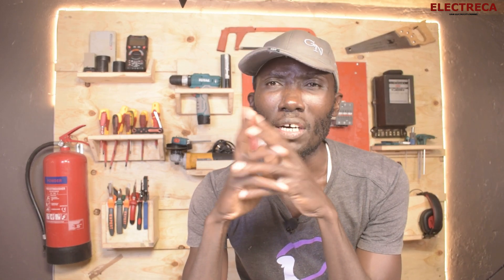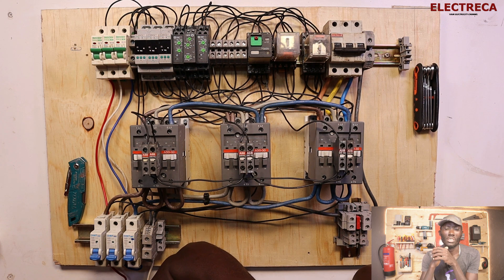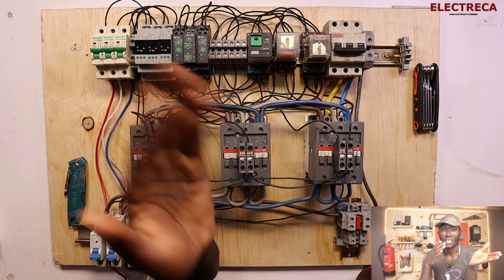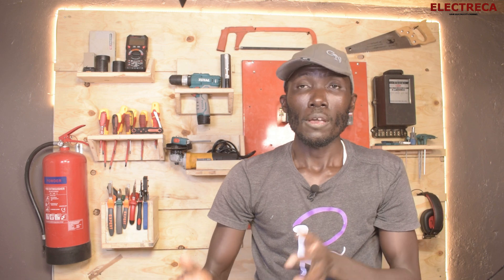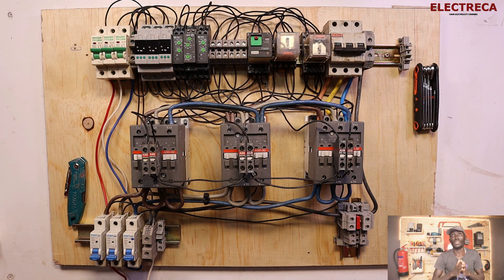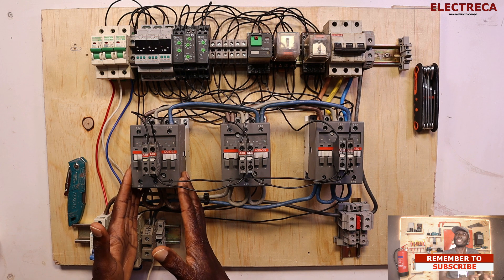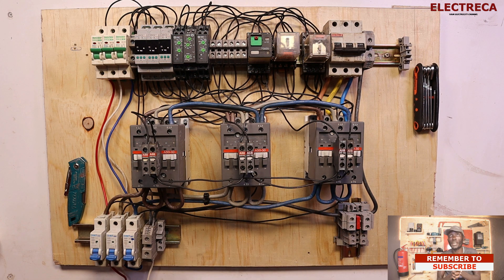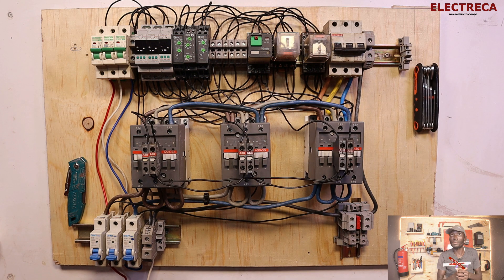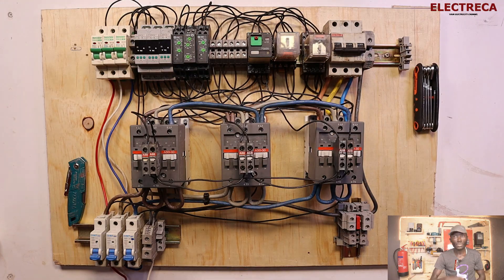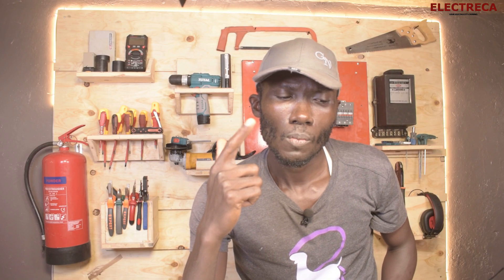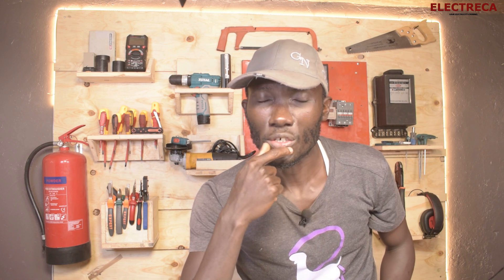So what is an APS? This phase selector is a device which selects phases depending on their availability and healthiness to supply the load. The system has three contactors — one for each phase: red, yellow, and blue. We also have power breakers supplying the board, an output breaker, and a control circuit.